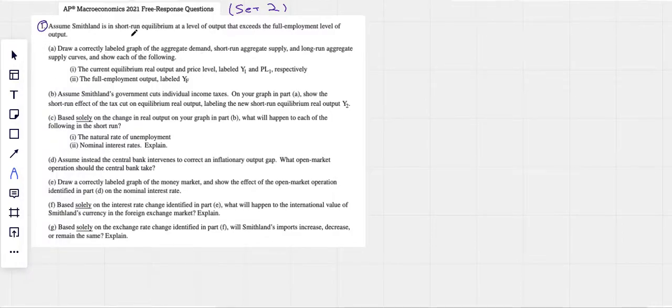Assume Smithland is in short run equilibrium at a level of output that exceeds full employment. First of all, that's code if output is greater than full employment. This obviously implies we have what we call an inflationary gap. Obviously, if you don't know that, it's going to be hard to draw this, right?